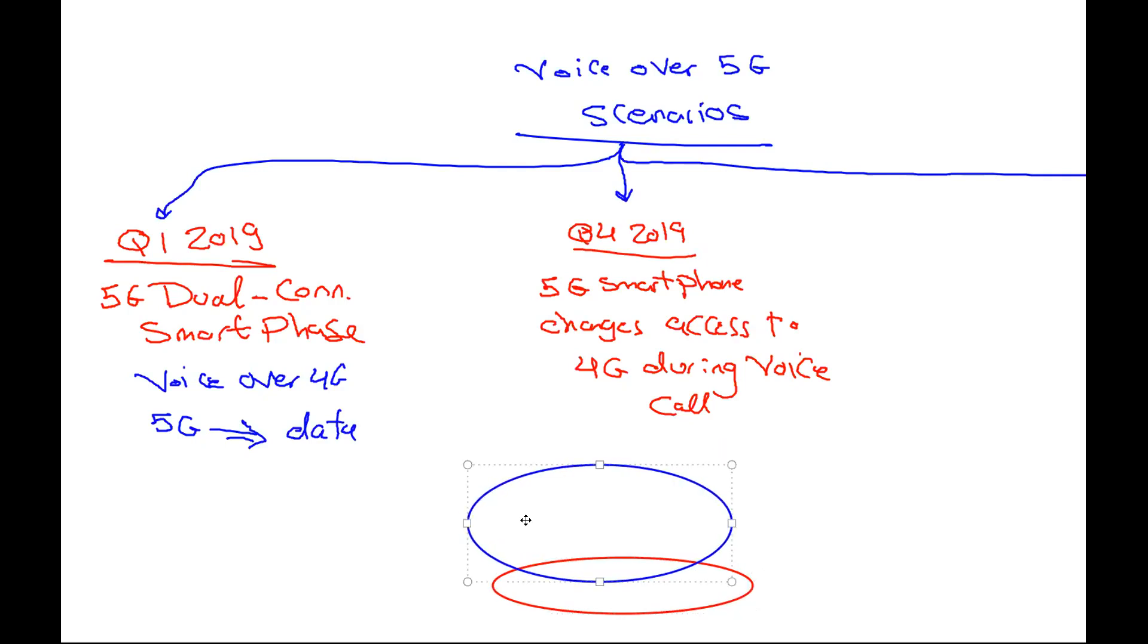This is the coverage of 4G. And we have a coverage of 5G. Here, this is coverage of 5G. So here, we will have 5G data. Here, 5G. And here, 4G. And here, we will have 2G and 3G. So here will be handover from 4G to 2G and 3G. And from 5G to 4G will be something called EPC fallback for voice.